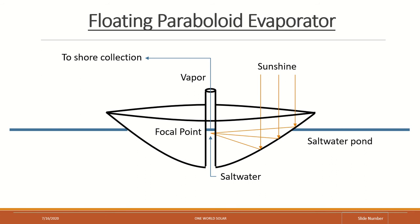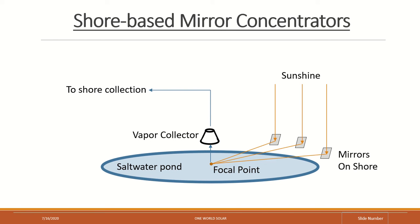Saltwater evaporates and rises through the pipe into a collection system and towards shore, where it will condense into fresh water for storage. The second version uses the same collection and condensation system as the first, but with mirrors located on shore which concentrate sunlight to a focal point on the pond's surface.